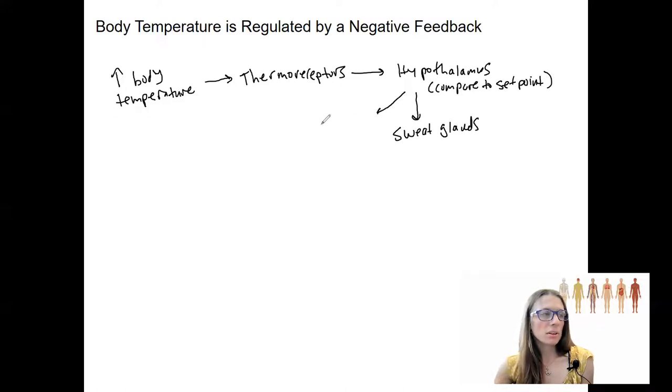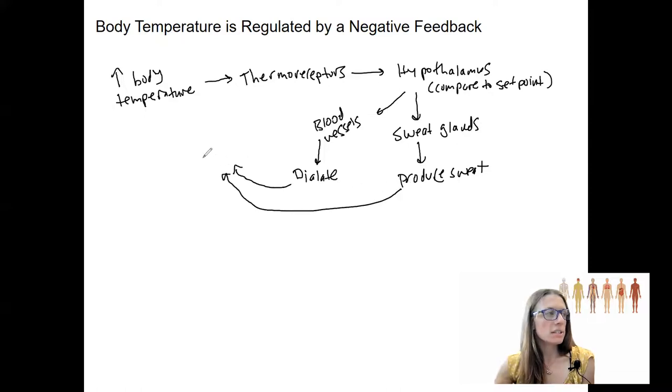This is going to tell our hypothalamus in our brains, it's going to give the information to the hypothalamus, so it's going to compare to the set point. The target or effector is going to be sweat glands. Another one is going to be blood vessels. What do you think it's going to do? Well, sweat glands are going to produce sweat. This is my target. This is my response. These are going to dilate.